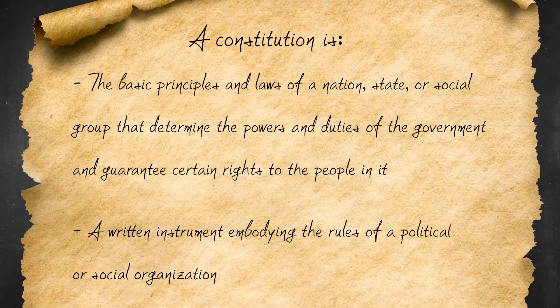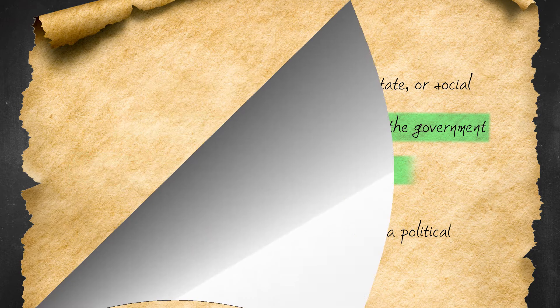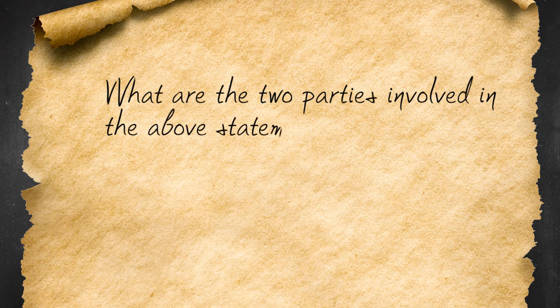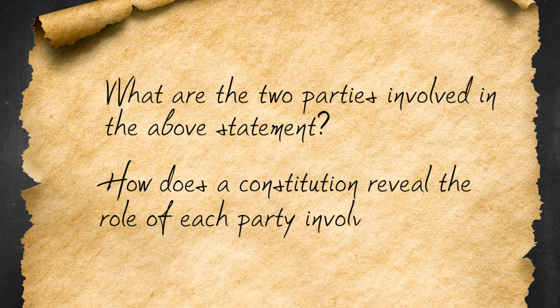Altogether, a constitution contains principles and laws that determine the powers and duties of the government and guarantee certain rights to the people in it. Pause the video after the following questions to jot down your answers: What are the two parties involved in the above statement? How does the constitution reveal the role of each party involved?